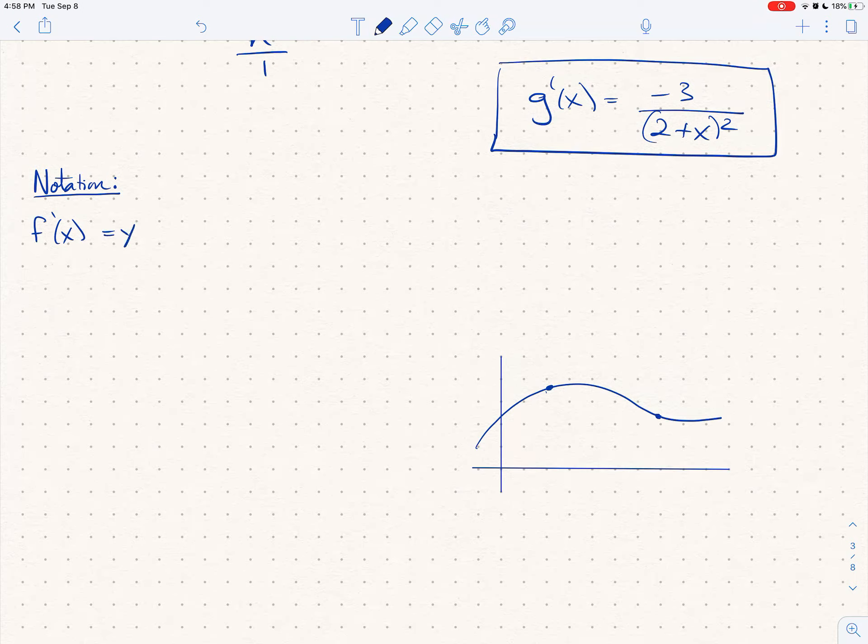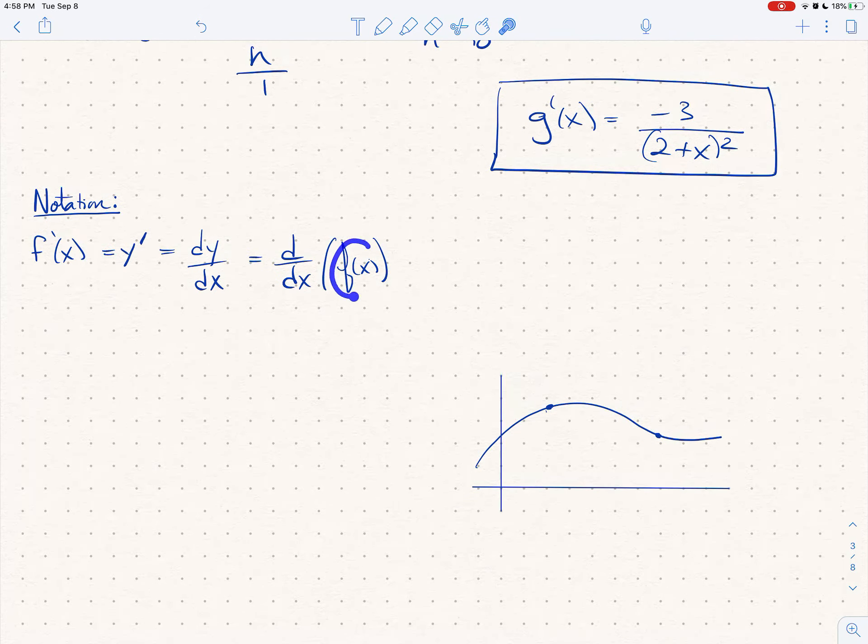We'll sometimes write y prime, where y is f of x. And here's the really new notation: we'll write dy over dx. That can also represent the derivative. Sometimes you'll see d dx of f of x, and that means take the derivative with respect to x of this function. And then every now and then you might even see df dx.